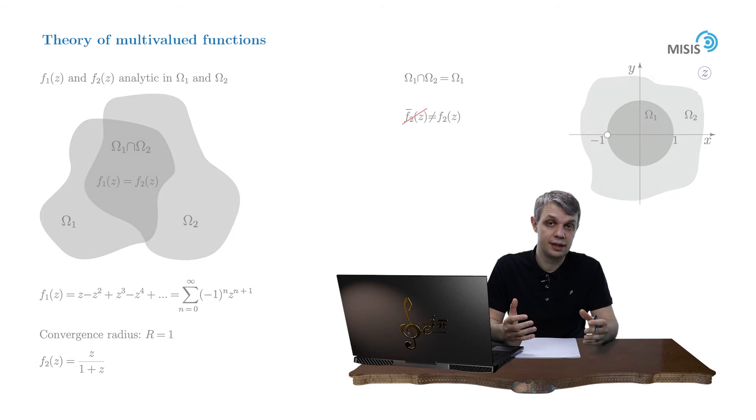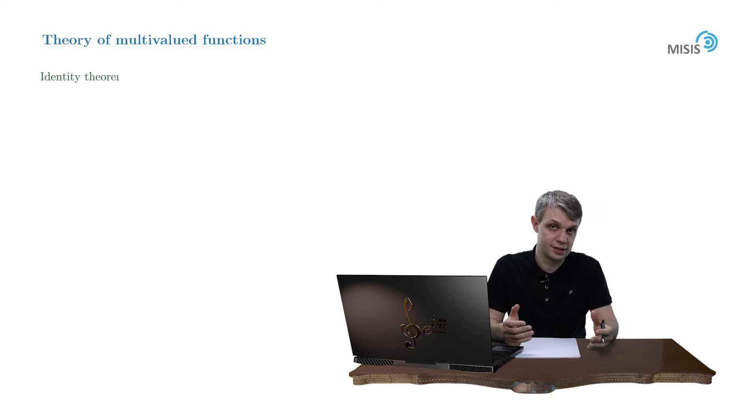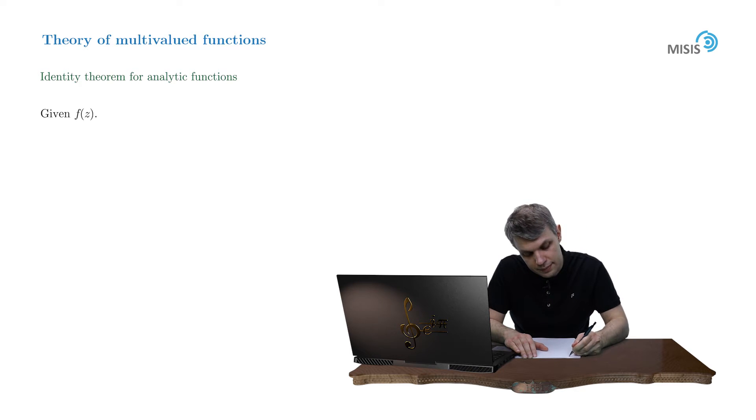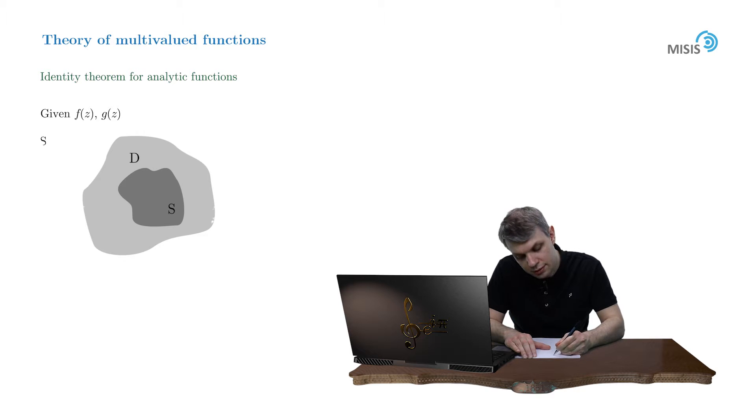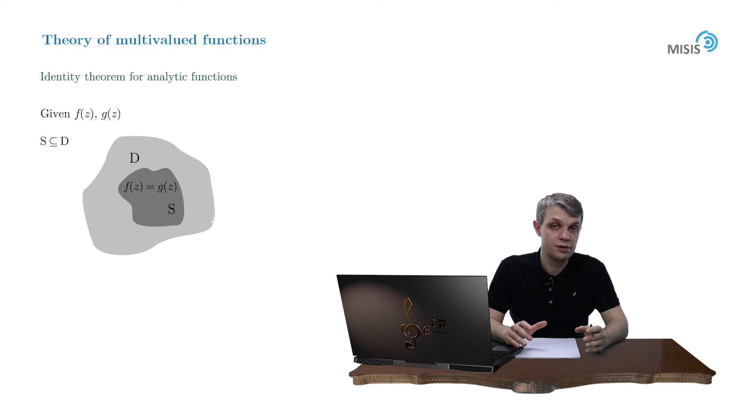This statement is essentially analogous to the so-called identity theorem for analytic functions. Given two functions f and g of z analytic inside some open and connected domain D, suppose there is some subdomain S which belongs to D, and f and g coincide on S. Then f and g functions coincide in the entire domain D, provided that this subdomain S contains the accumulation point.